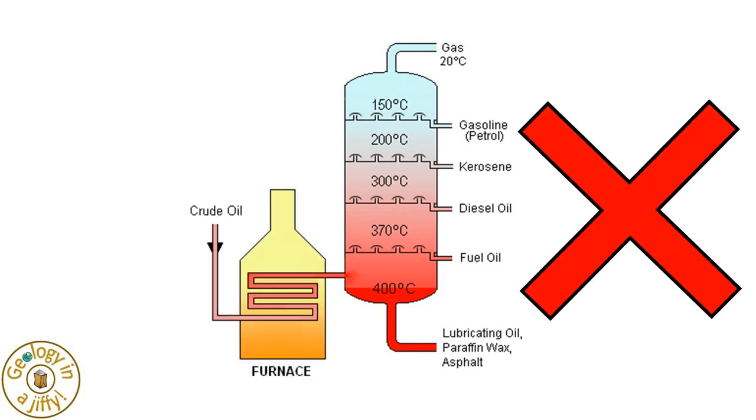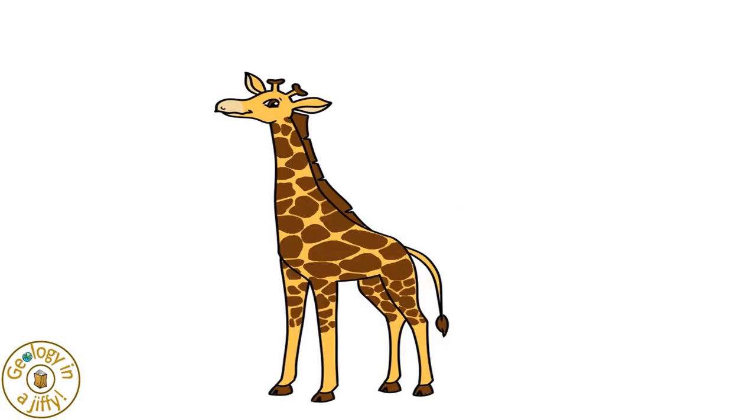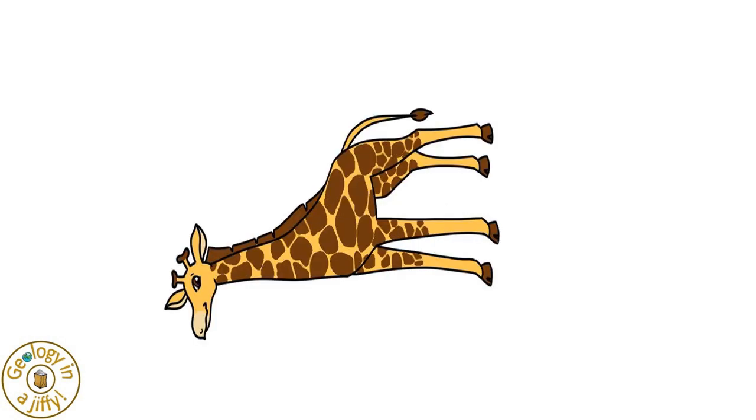Doesn't the diagram look nasty with the labels on it? Let's remove them so the diagram is now simpler to understand. Using our Jiffy model where Jiffy lies on their side, we can then match Jiffy to the diagram using Jiffy in their lying down position.